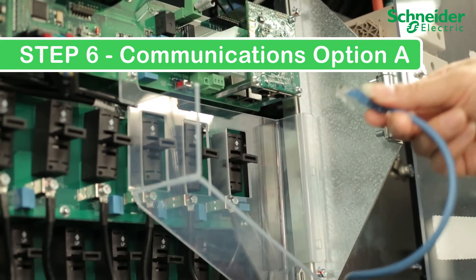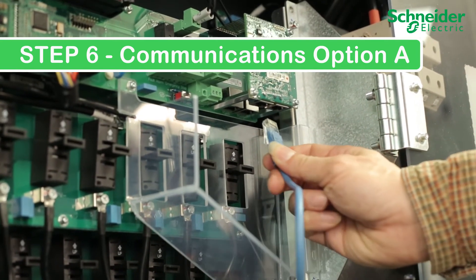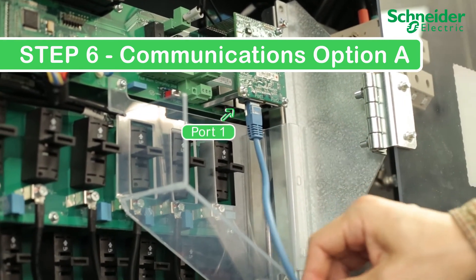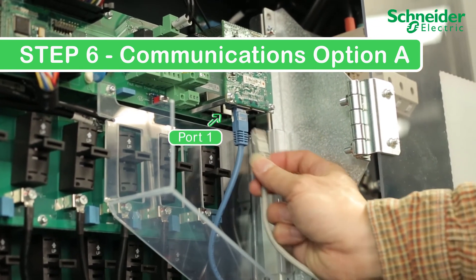Step 6: Communications option A. Make your Ethernet connection. For star topology or end of daisy chain connections, connect to port 1. For mid-string CL60s in a daisy chain, connect the second cable to port 2.